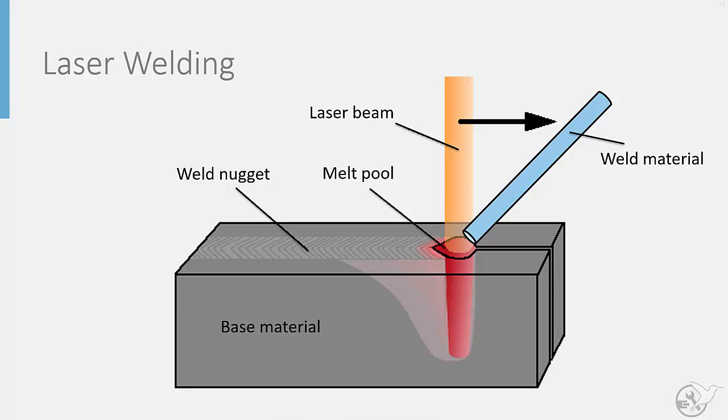As the laser beam and filler rod travel along the joint, the material in the melt pool solidifies and cools. As can be seen in the image, the power and intensity of the laser can allow for relatively deep penetration of the melt pool into the base material, allowing for deep welds without the need for creating a notch in the material to be joined.